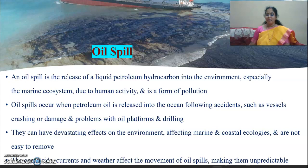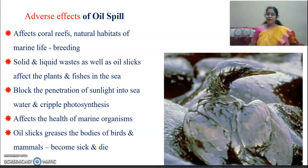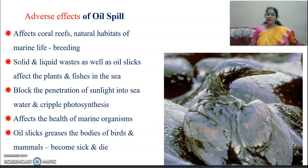The adverse effects of oil spill include damage to coral reefs, the natural habitat of marine life, and breeding grounds. Oil slicks affect plants and fish in the sea by blocking sunlight penetration into the sea water, crippling photosynthesis, and affecting the health of marine organisms. Oil also coats the bodies of birds and mammals, as seen in the picture, causing them to become sick and die.